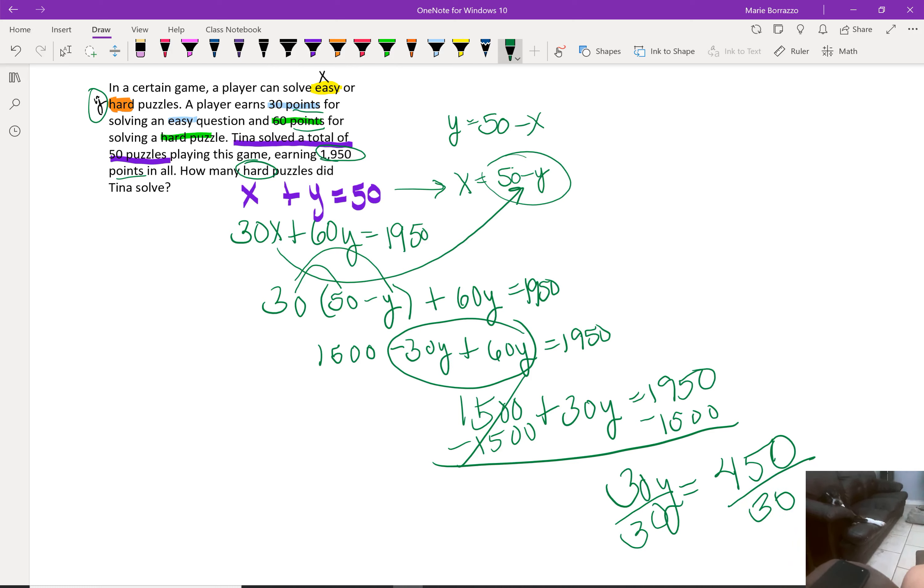...that means that she completed 15 difficult puzzles. All right, remember the zeros are canceling each other. 3 goes into 45 15 times. All right, and that answers that question.